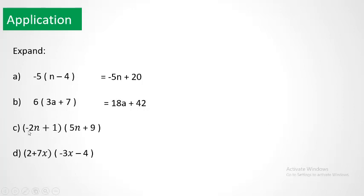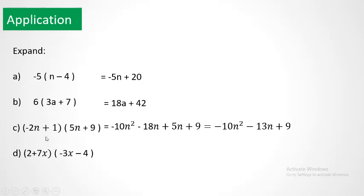Here we have two factors of more than one term. Minus 2n multiplied by 5n and minus 2n multiplied by 9. Then plus 1 multiplied by 5n and plus 1 multiplied by 9. This gives minus 10n squared — since we have n times n — minus 18n plus 5n plus 9.